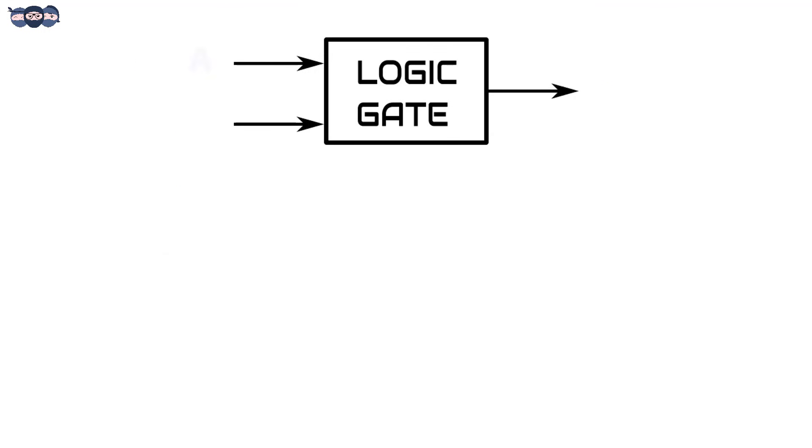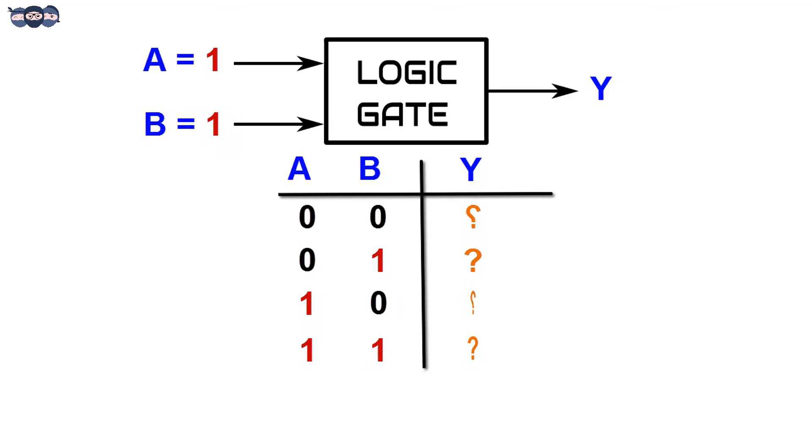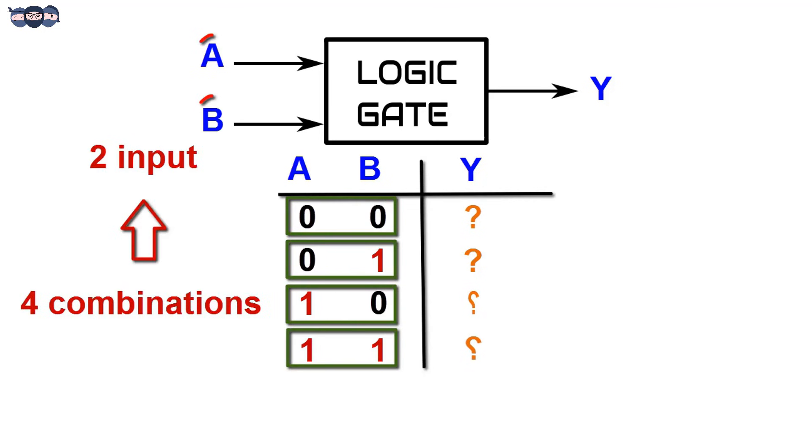Another system has two inputs A and B and a single output Y. It may happen that A has the value 0 and B takes value 0 or 1. When A is at logic 1, B may take values 0 or 1. There are four input combinations for two input variables.